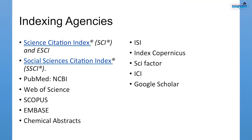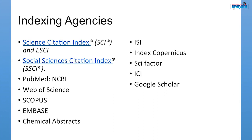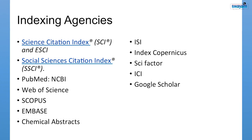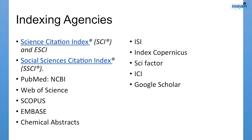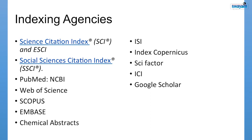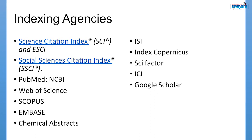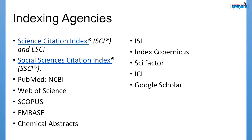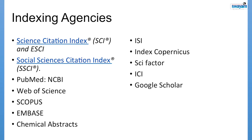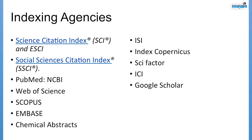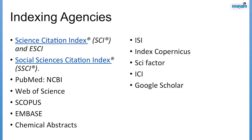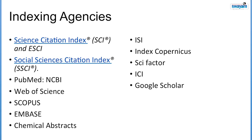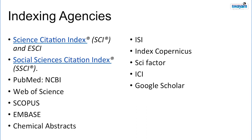What are the indexing agencies? Let's see them one by one: Science Citation Index (SCI), Expanded Science Citation Index (ESCI), Social Science Citation Index (SSCI), PubMed, NCBI, Web of Science, Scopus, Embase, Chemical Abstracts, ISI, Index Copernicus, ICI, and at last Google Scholar — with the most widespread coverage.